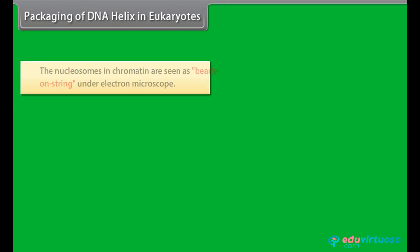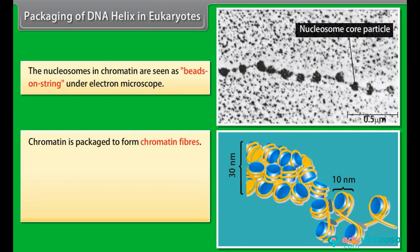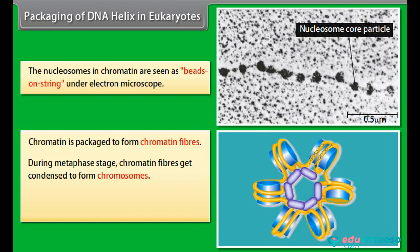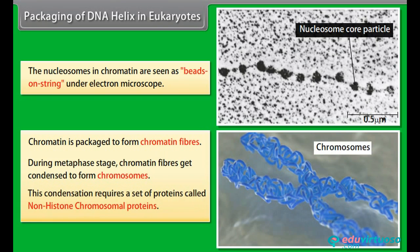The nucleosomes in chromatin are seen as beads on a string under an electron microscope. Chromatin is packaged to form chromatin fibers. During the metaphase stage, chromatin fibers get condensed to form chromosomes. This condensation requires a set of proteins called non-histone chromosomal proteins.